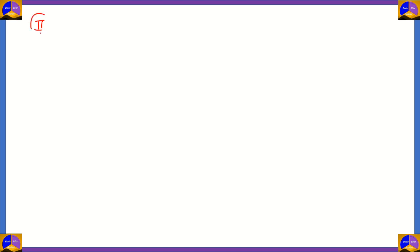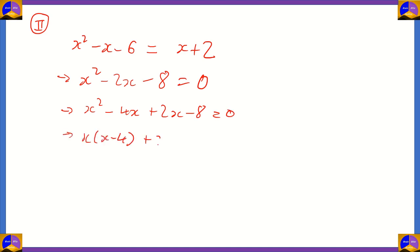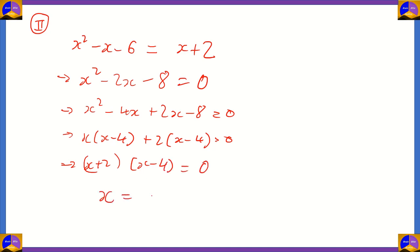In Case 2, x²−x−6 = x+2 (the positive side). Taking x+2 to the left: x²−2x−8 = 0. Splitting the middle term: x²−4x+2x−8 = 0, giving x(x−4)+2(x−4) = 0, so (x+2)(x−4) = 0. Therefore x = −2 or x = 4.